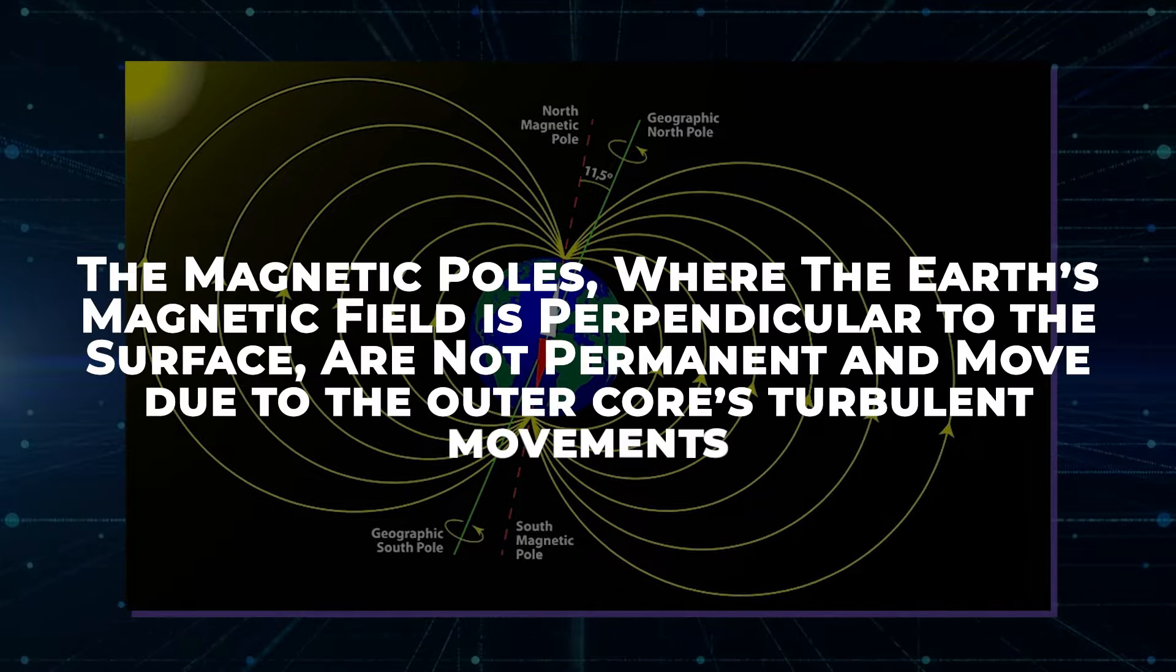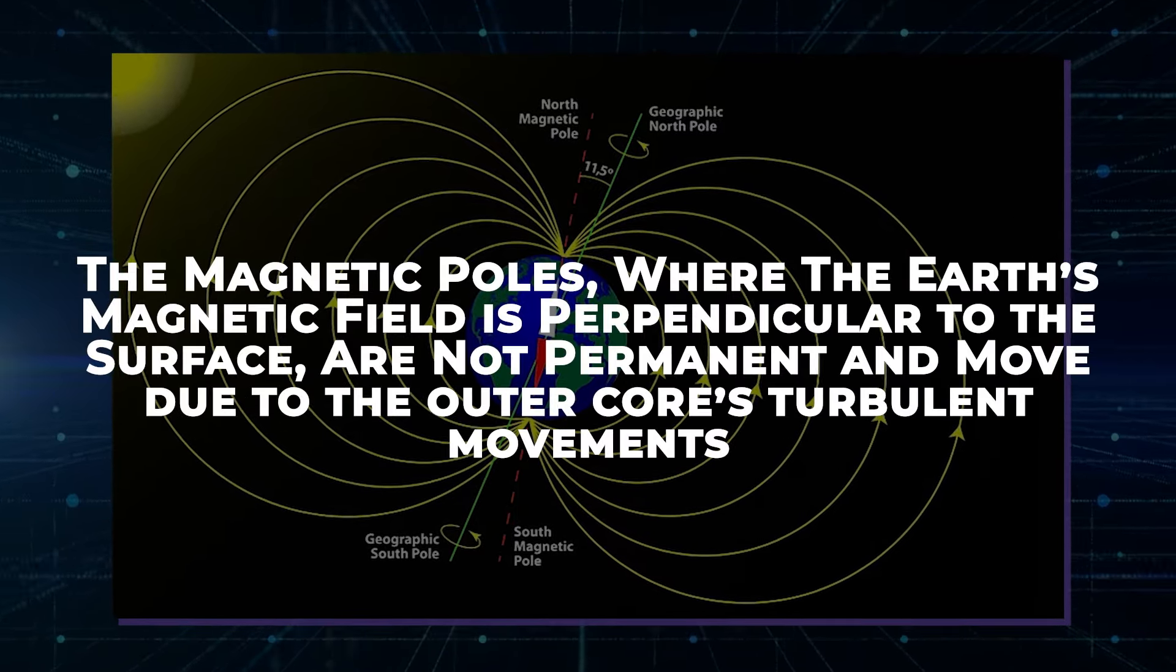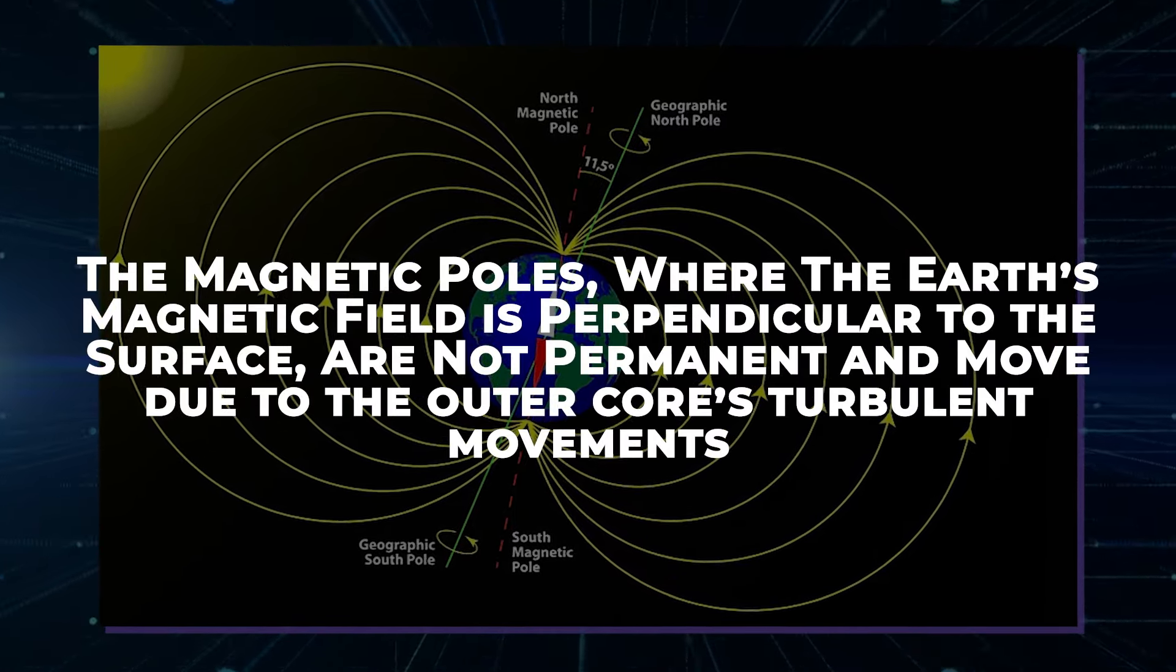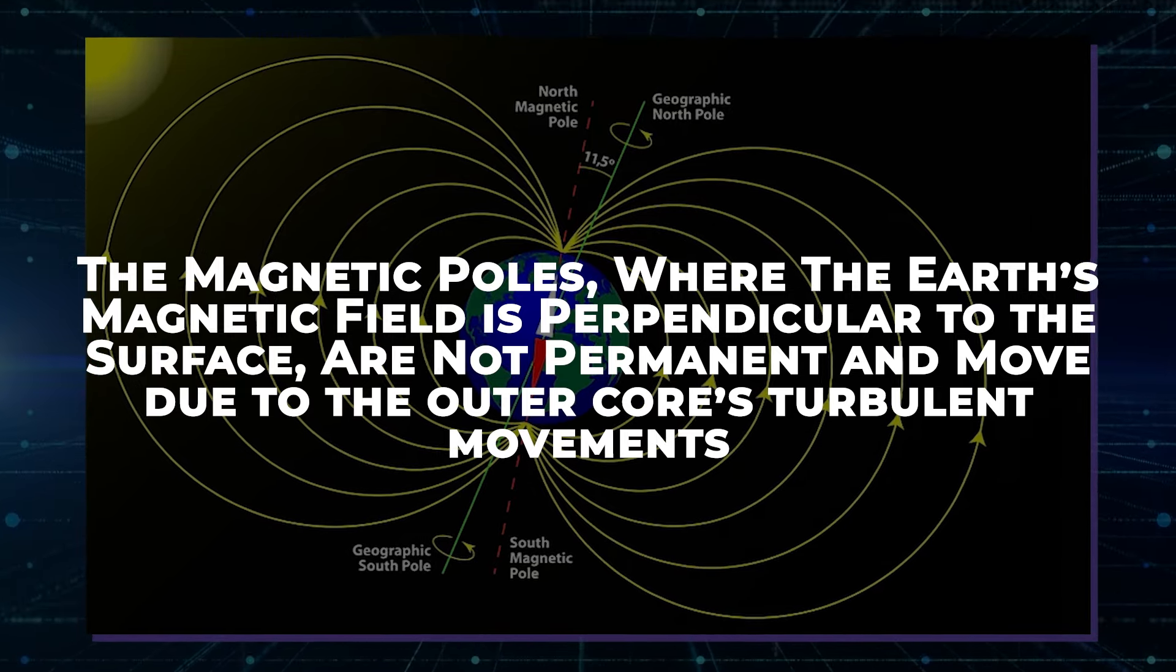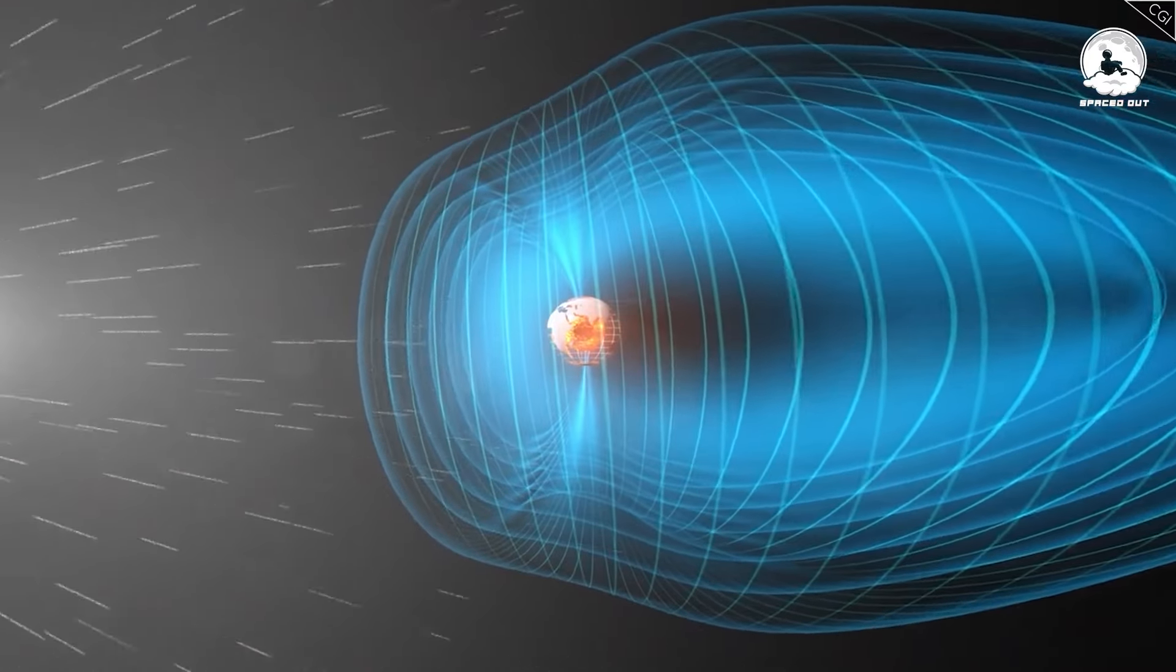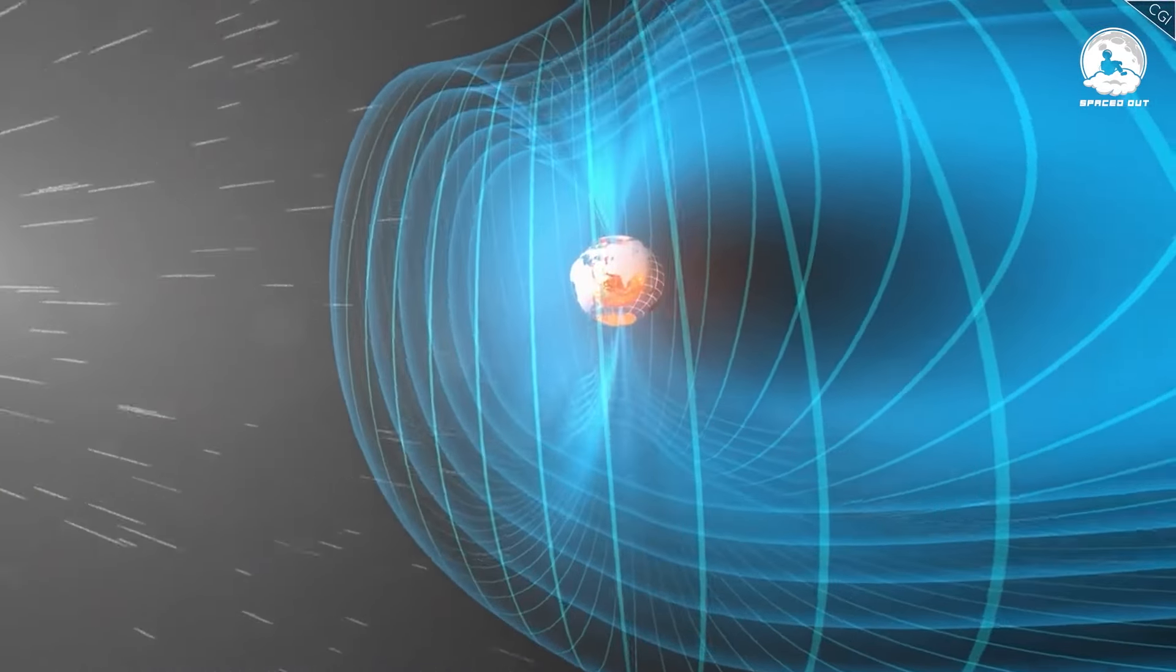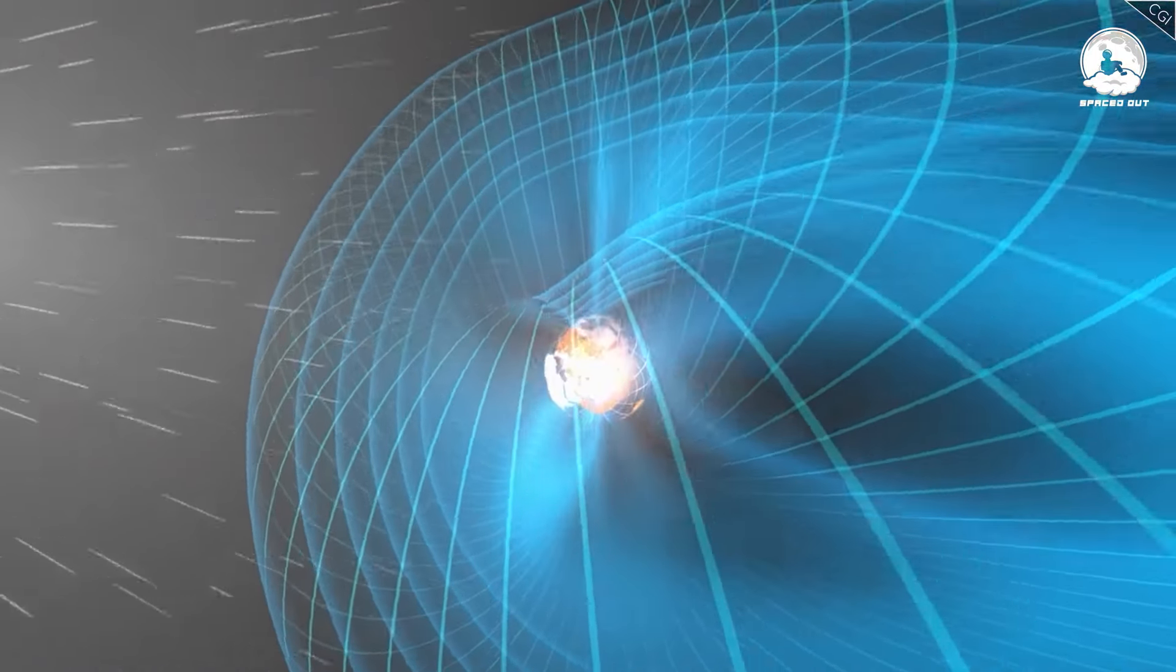On the other hand, the magnetic poles, where the Earth's magnetic field is perpendicular to the surface, are not permanent and move due to the outer core's turbulent movements. Throughout Earth's history, the magnetic poles have not only moved but also completely switched places in events called reversals.